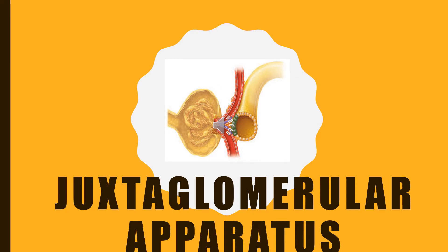In the unit renal physiology, we have already dealt with the kidney, its functional anatomy, role in homeostasis and functions, then nephrons, its structure and difference between cortical and juxtamedullary nephrons. Now, we will move on to the new topic: the juxtaglomerular apparatus.